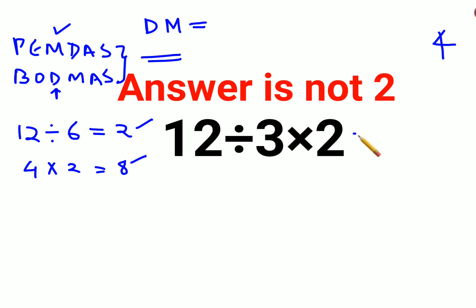The reason is a lot of people forget that division and multiplication hold equal precedence. Whenever you have sums like this, you just go from left to right. Whatever operation comes first on your left-hand side will be done first.